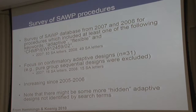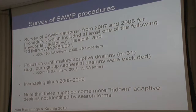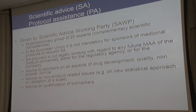Presenting the results of the survey of scientific advice procedures: looking at letters from 2007 and 2008 focused on confirmatory adaptive design, we found 31 scientific advice letters, with numbers clearly increasing from 2005–2006 to 2007–2008. Note that there may be more hidden adaptive designs not identified by our search terms — at that time, some companies were really afraid to use the terms 'adaptive' or 'flexible,' even if the design truly was adaptive.